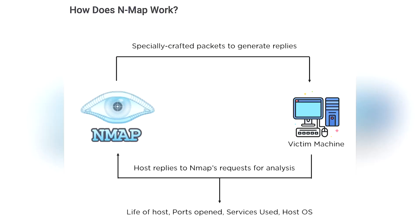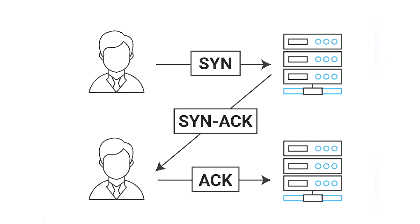Let's talk about and explain how Nmap works. First, you need to know how a network works. For example, if you open a browser and type in www.google.com, you go to Google.com and it reaches your browser. This is a normal network.